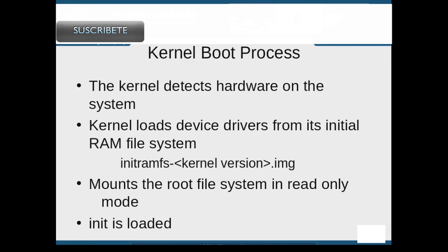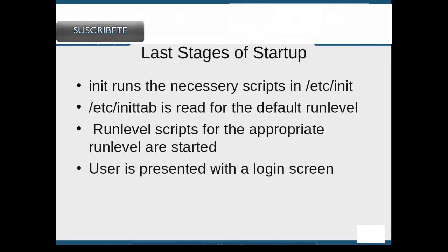The kernel then loads the root filesystem in read-only mode and then executes the init process. Init is short for the initial process, whose process identifier is always 1. After the init process is started, it runs the necessary script files in the /etc/init directory. Next, the /etc/inittab file is read to determine the default system run level. Once the default run level is determined, the scripts relating to this run level are then read and executed.